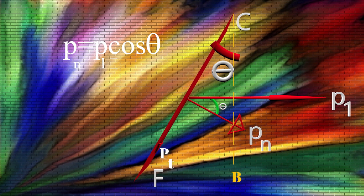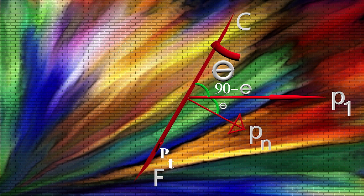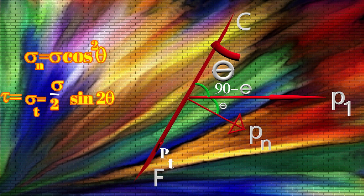Similarly, the angle for the shear component is 90 minus theta, so Pt equals P1 cos(90° − theta), which equals P1 sin theta. Substituting the values of Pn and Pt into the stress equations, we get: normal stress sigma_n equals sigma cos²theta, and shear stress tau equals (sigma / 2) sin 2theta. We have now found the normal stress and shear stress on the oblique plane using the analytical method.